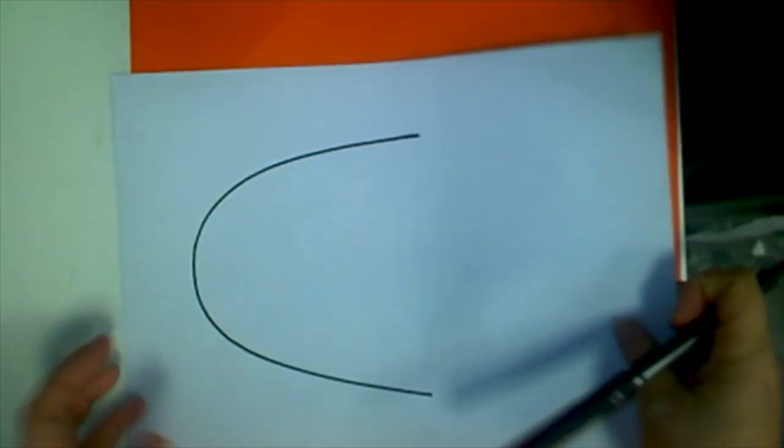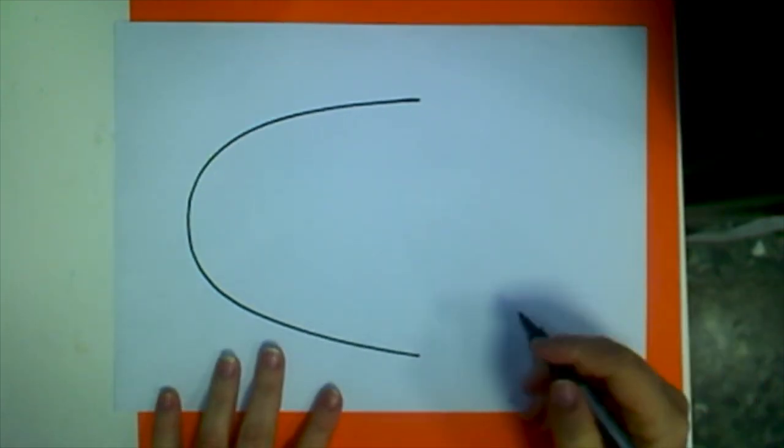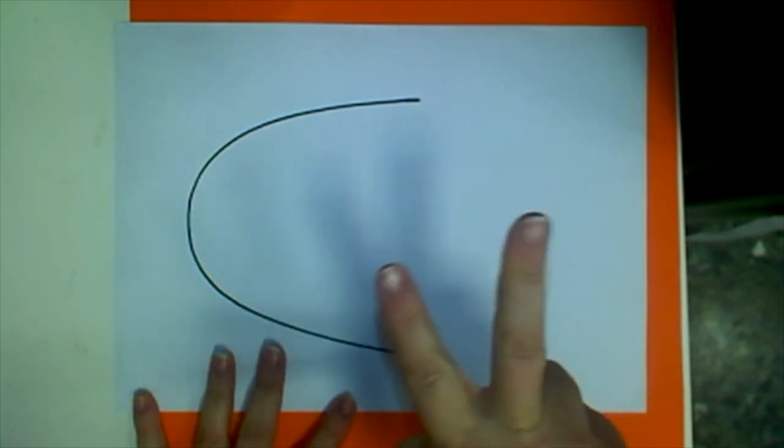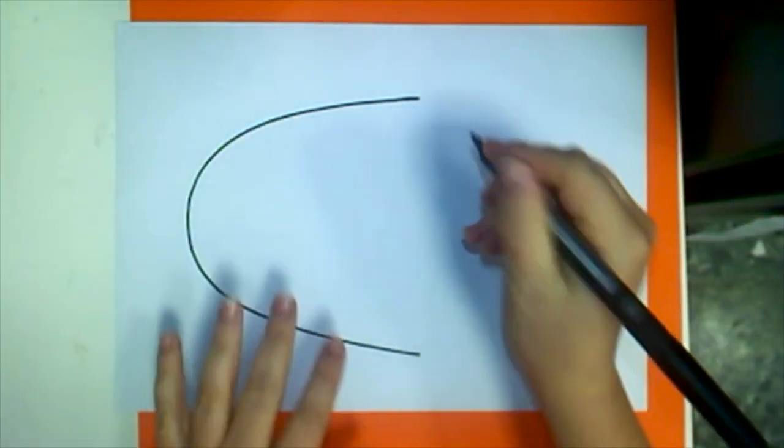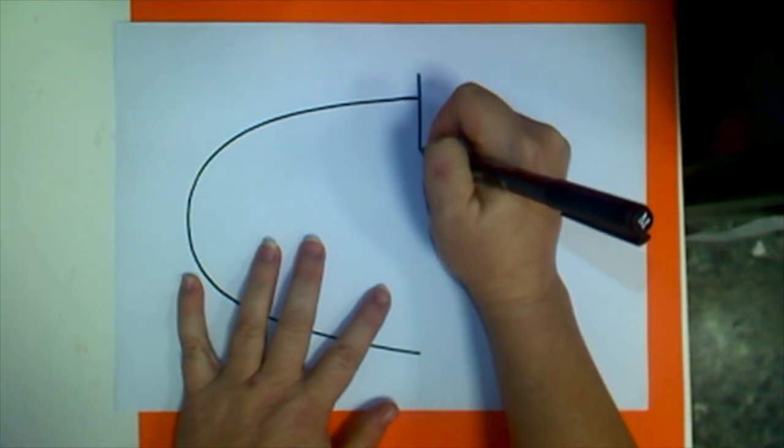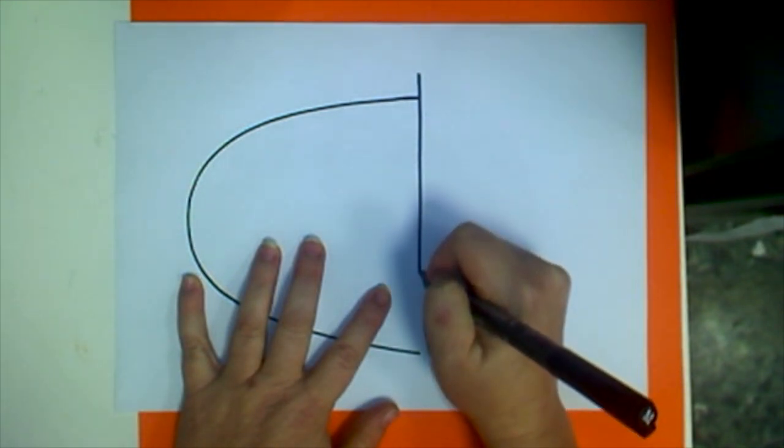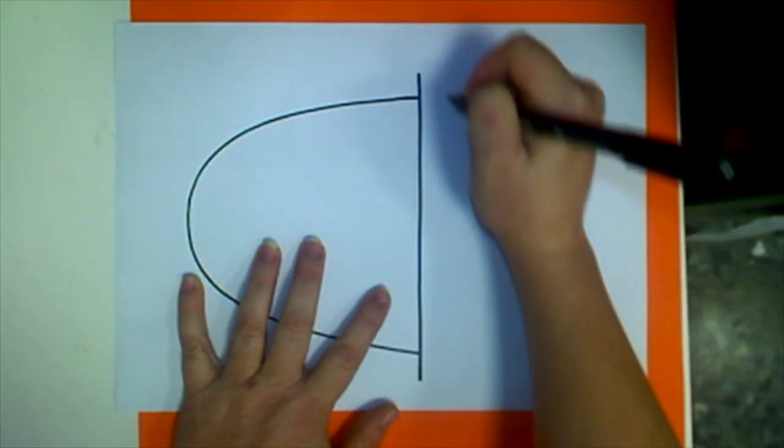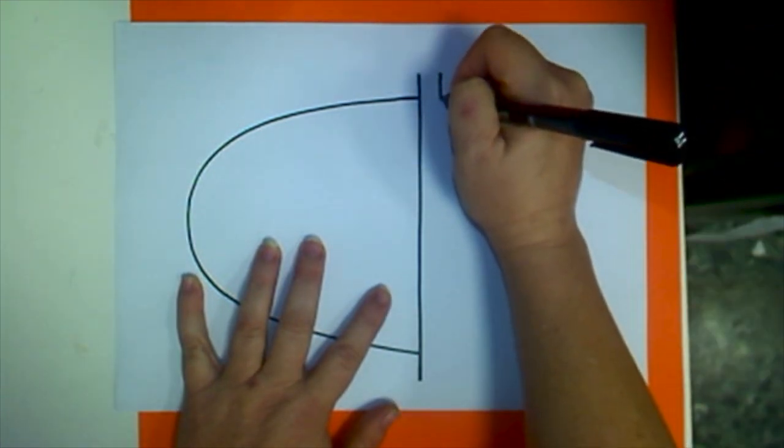Then I'm going to take my paper and turn it so that the bell of my U faces left. Then I'm going to make two parallel lines or a number 11. The first vertical line is going to touch both ends of my letter U to close that shape, and then I'm going to draw a line next to it that is parallel.